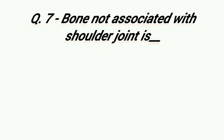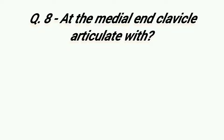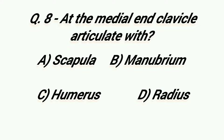Bone not associated with shoulder joint is: Option A: Humerus, Option B: Clavicle, Option C: Scapula, Option D: Ulna. Right answer is Option D, Ulna. The medial end of the clavicle articulates with: